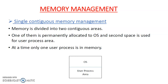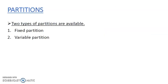The next topic is partitions. Generally, the main memory is divided into various sections, and this is called a partition. There are two types of partitions available: the first one is a fixed partition, and the second one is the variable partition.